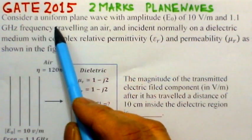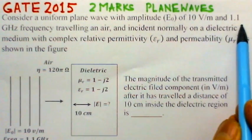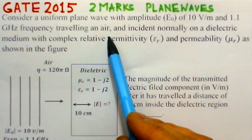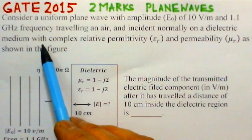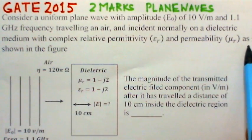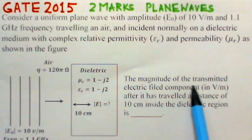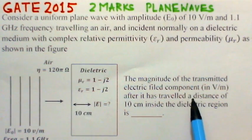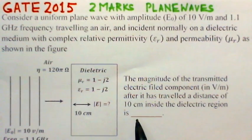We will read out the problem here. Consider a uniform plane wave with amplitude E0 of 10 V/m and 1.1 GHz frequency traveling in air, incident normally on a dielectric medium with complex relative permittivity εr and permeability μr as shown in the figure. The magnitude of the transmitted electric field component in volts per centimeter after it has traveled a distance of 10 centimeters inside the dielectric region is to be found.